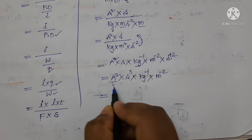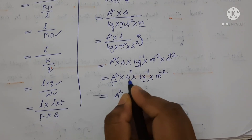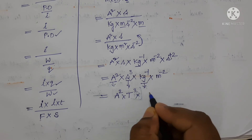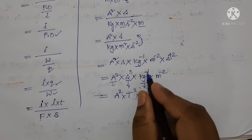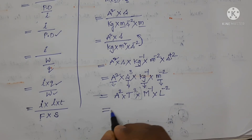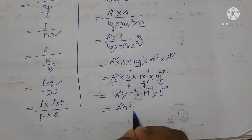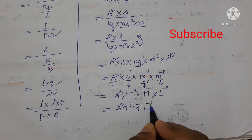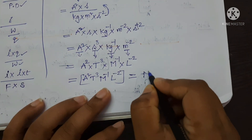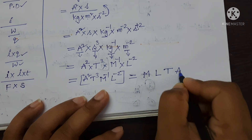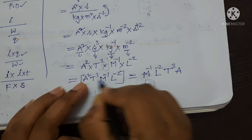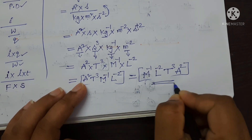Now write the dimensional formula. Ampere is expressed in terms of capital A square. Second is expressed in terms of capital T — here it is T cubed. Kg is expressed in terms of capital M, so M power minus 1. Meter is expressed in terms of capital L, so L power minus 2. Writing again: A square, T cube, M power minus 1 and L power minus 2. In the standard M, L, T, A format, the dimensional formula for conductance is M power minus 1, L power minus 2, T power 3, A power 2. This is the dimensional formula for conductance.